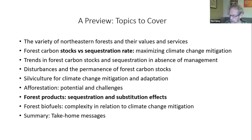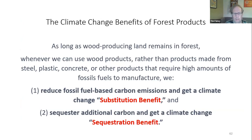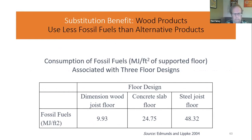Durable forest products contain a lot of carbon. There are two ways in which these forest products can help mitigate climate change. One is the carbon sequestration benefit — there's carbon in the forest products. The second is the substitution benefit: there's much less fossil fuel use associated with using wood as a building material than using steel or concrete. This example from the literature shows the amount of fossil fuels used to make a wood floor compared with a concrete slab floor or a steel-based floor — it's three to five times higher for the non-forest product.